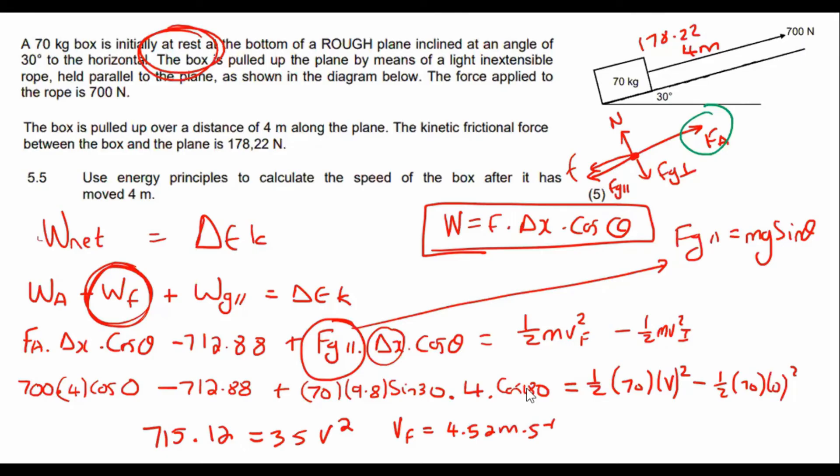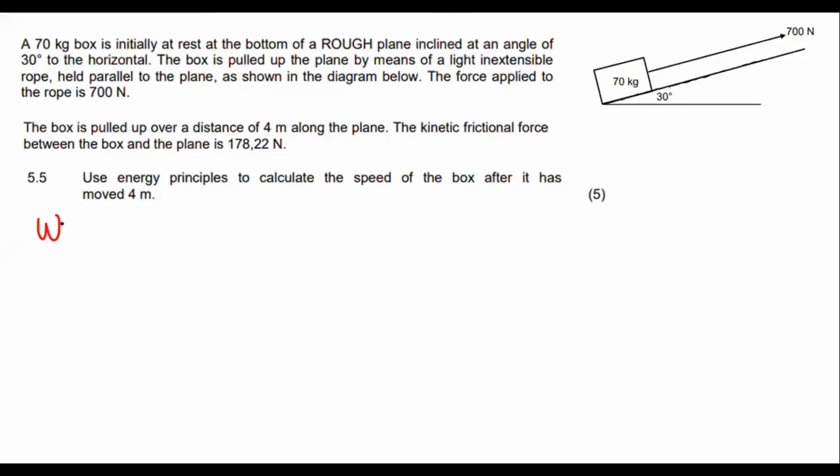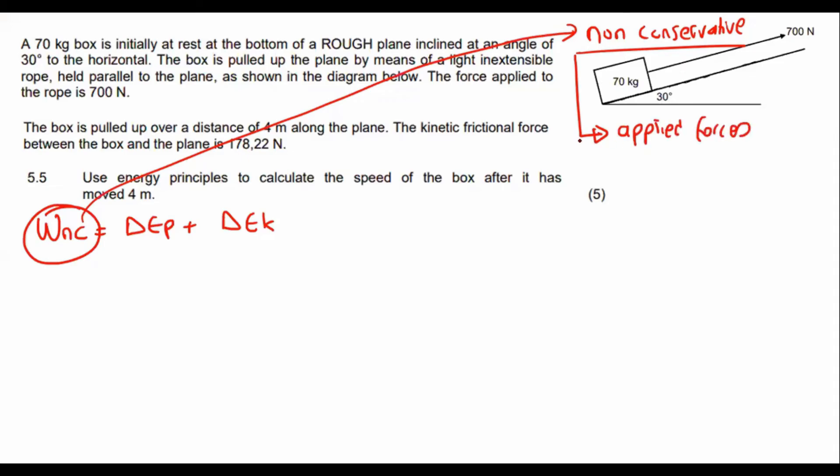OK, guys, so that's how you would do it that way. Now, I'm also going to do this exact same question, but we're going to use the WNC formula instead. The other formula that you can use is WNC equals to delta EP plus delta EK. Now, we've spoken about this in detail in the past, but WNC stands for non-conservative. And in summary, non-conservative forces are only things like applied forces or friction. OK, that's only that. Those are the only non-conservative forces that you use. You don't use gravity. So now, remember, the formula for work is always equal to the force multiplied by the distance or the displacement times by cos theta. So over here, I'm going to put all the non-conservative. So that will be the applied force plus the friction over there. And then over here, I'll have delta EP plus delta EK.